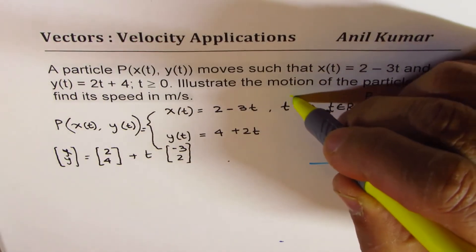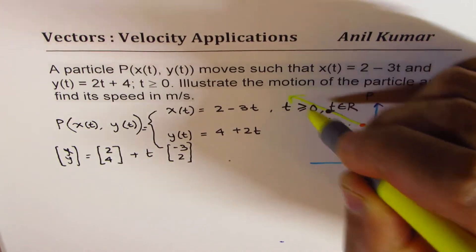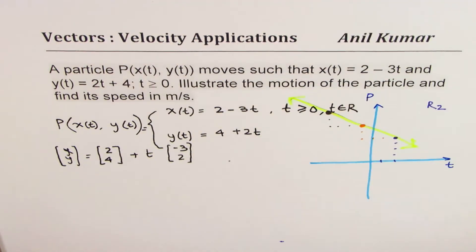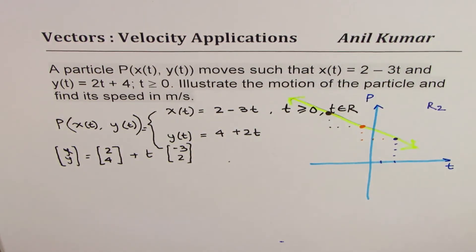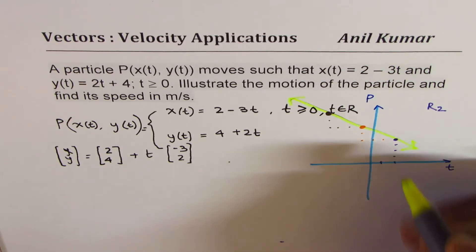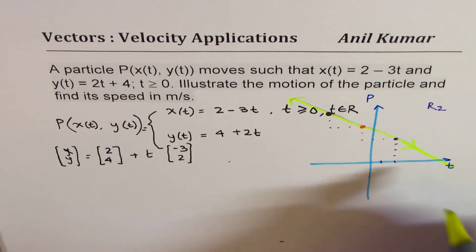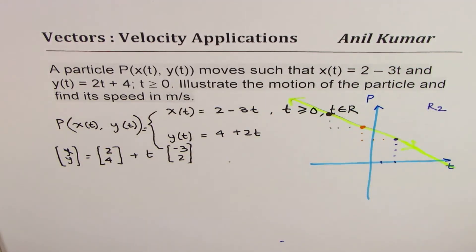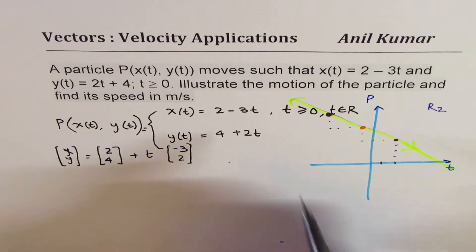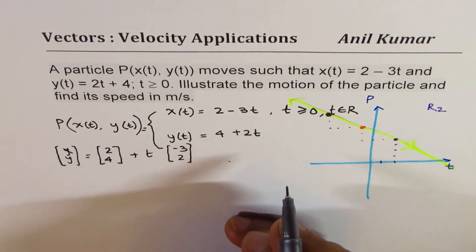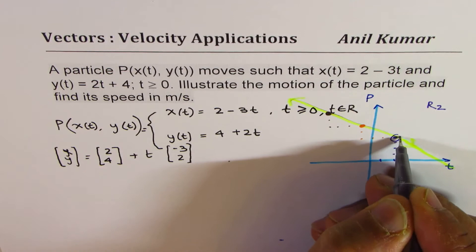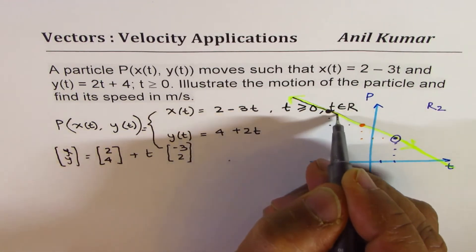You get an idea? So the path which is being followed is like this—join these points. Now if you notice, you could go either way, but anyway this is the path which you are following. Since we are given a condition that t is greater than or equal to 0, you are actually starting from here and moving this way.